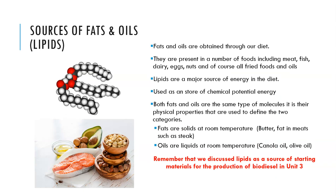In terms of foods, fats and oils are largely obtained through our diet — cooking oil, meat, fish, dairy, eggs, nuts, and fried foods. They're a major source of energy in the diet and have been associated with an increase in obesity due to high fat and high sugar convenience foods. Fats and oils are used as a store of potential chemical energy. Their physical properties are what define them — fats are solid and oils are liquid at room temperature.